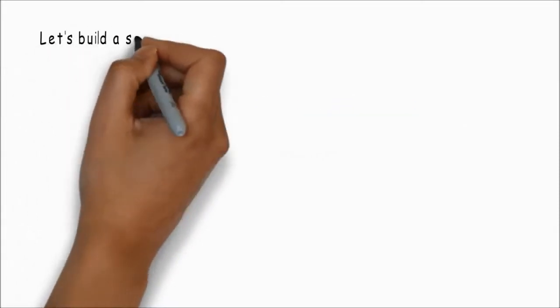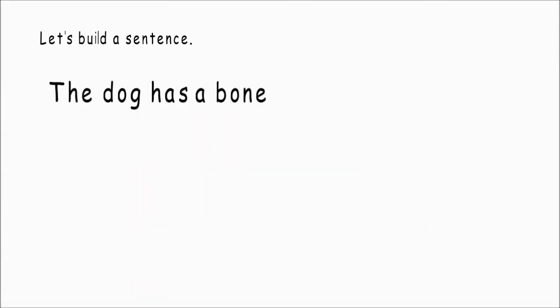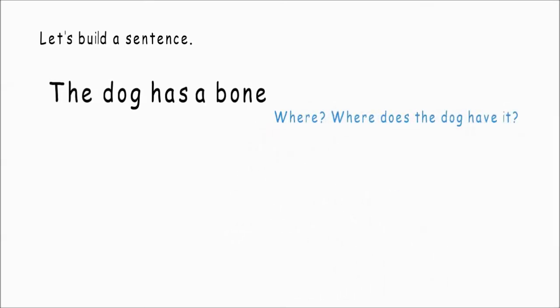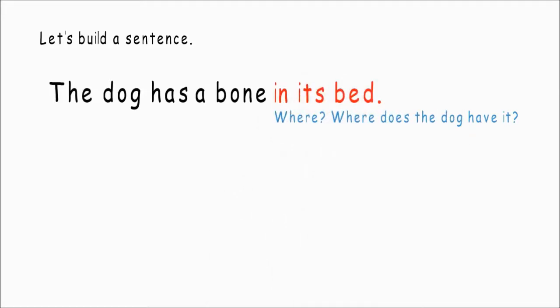Let's build a sentence. The dog has a bone. Where? Where does it have the bone? Where does the dog have it? The dog has a bone in its bed. OK.